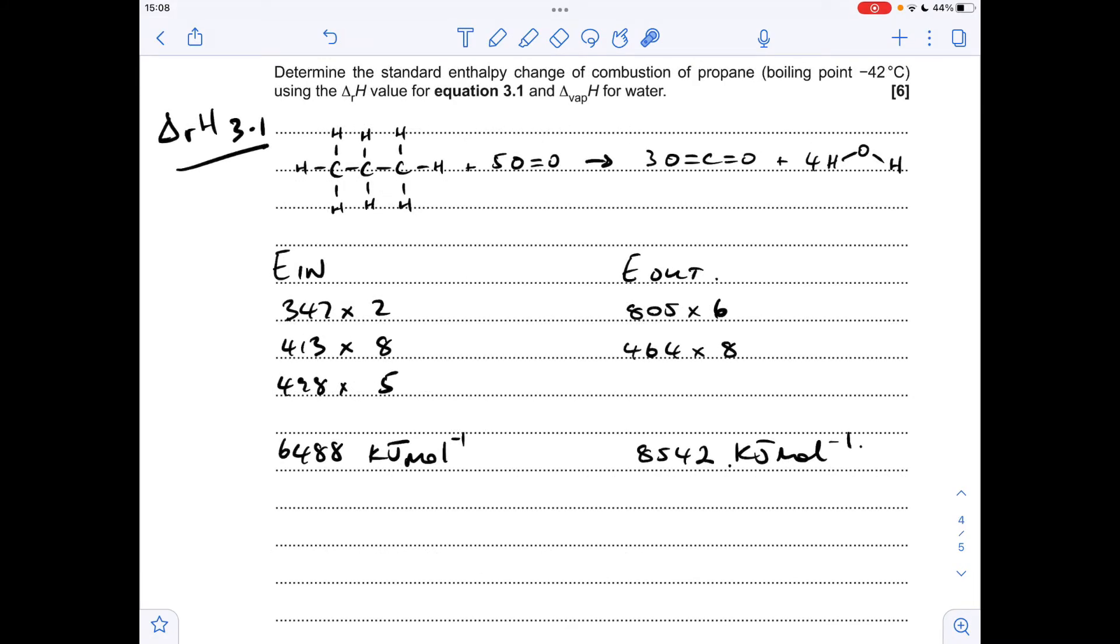So starting with the enthalpy change of reaction for 3.1, using those bond enthalpy values, I call this an in-minus-out calculation. So what we're doing, we're putting energy in to break the bonds in the reactants. So obviously we've got 2 moles of CC single bonds, so 347 times 2. 8 moles of CH bonds, so we've got that there. 5 moles of OO double bonds, we've got that there. So total amount of energy that has to go in, 6488 kilojoules per mole.